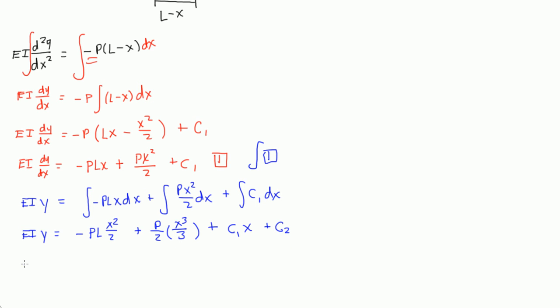Alright, so let's simplify this down a bit. EIy is equal to negative PLx²/2 plus Px³/6 plus c1 times x plus c2. This is equation 2, this is our equation for deflection.